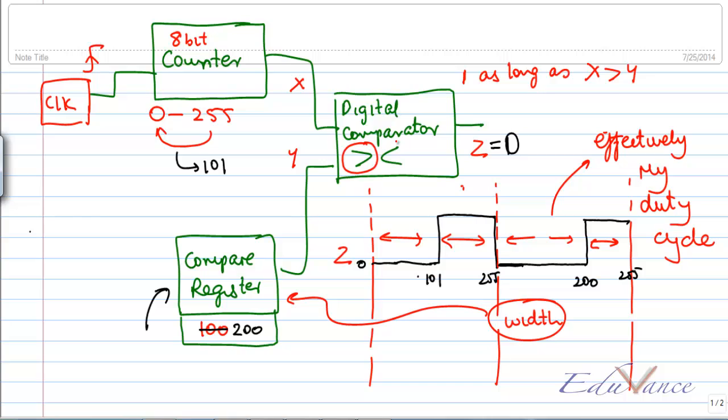Similarly, if I use the less than function here, so now this waveform gets inverted, which is now it will be 1 for that much time and then it will be 0. Similarly, this will be 1 for that amount of time and it will be 0.